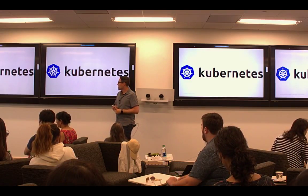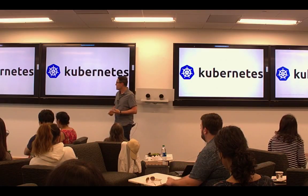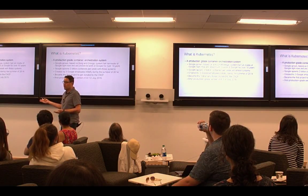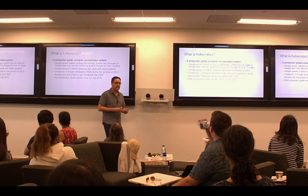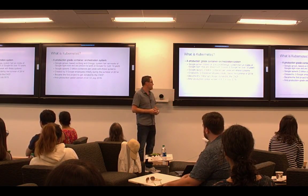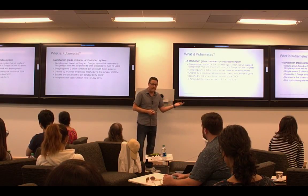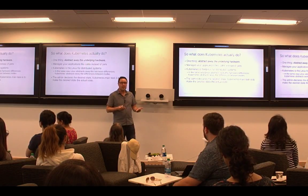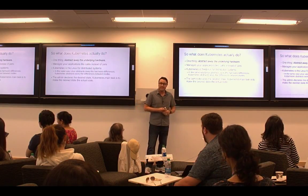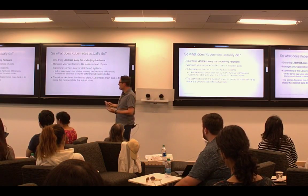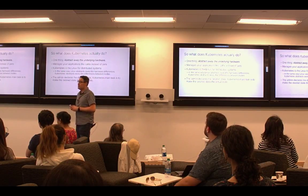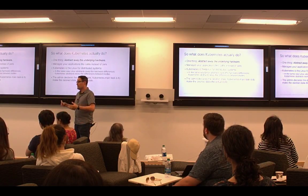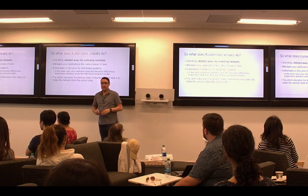A few stats on Kubernetes: it came from Google and grew out of their internal usage of Borg. It was started by Google engineers; the first production-grade release was in July 2015 — three years ago. Kubernetes is really about being like Linux for distributed systems. It's all about declarative things — the admin declares the desired state of the system and Kubernetes does its best to make sure the system runs at that desired state across many different nodes.